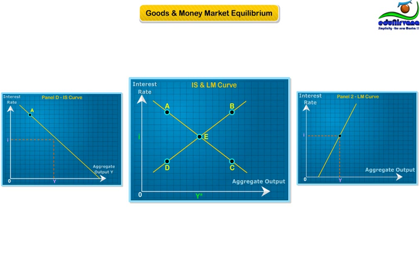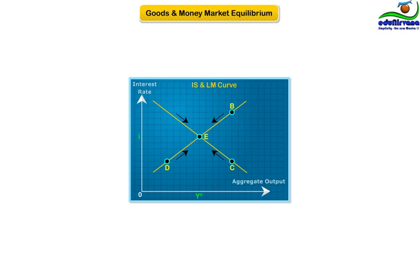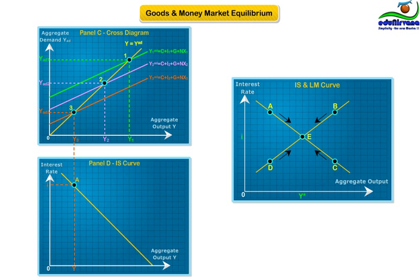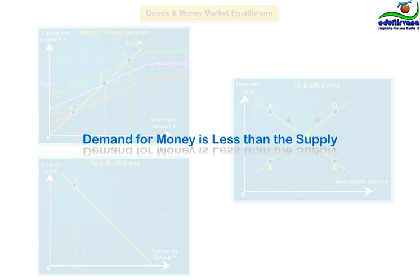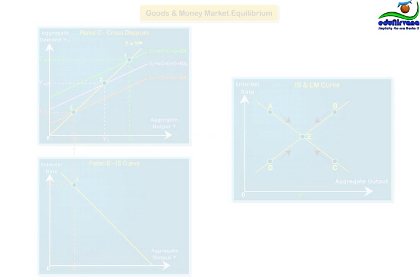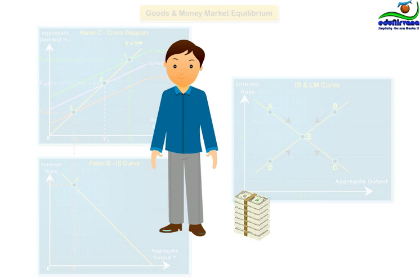At any other point in the diagram, at least one of these equilibrium conditions is not satisfied and market forces move the economy towards the general equilibrium point E. To learn how this works, let's consider what happens if the economy is at point A, which is on the IS curve but not the LM curve. Even though the goods market is in equilibrium so that aggregate output equals aggregate demand, the interest rate is above its equilibrium level, so the demand for money is less than the supply. Because people have more money than they want to hold,